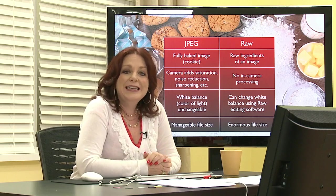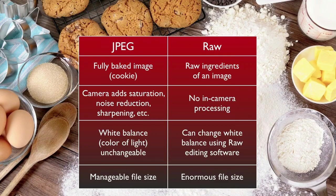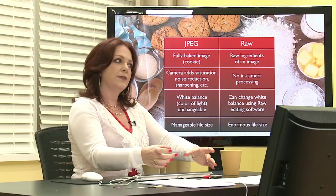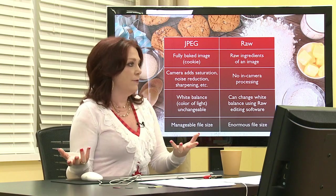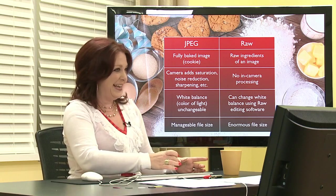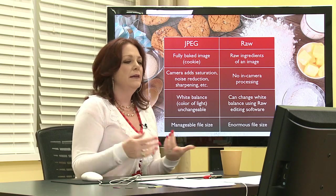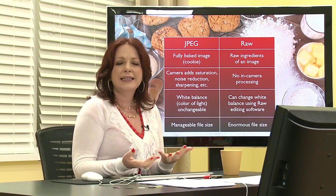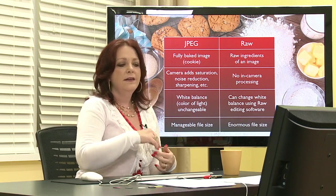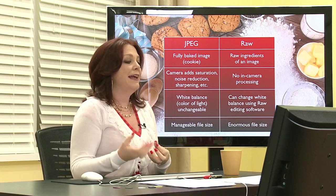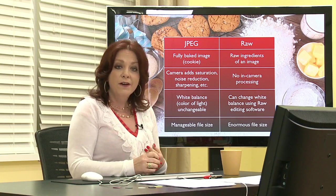Before we jump into the actual software, let's talk about the differences between shooting in raw format versus JPEG. Using the ingredients for baking analogy, a JPEG is like a baked cookie, whereas raw is like the raw ingredients of a cookie. Raw images are unprocessed and uncompressed — like a negative. They contain maximum information about your file: maximum color, maximum lighting information. Because there's so much information and it hasn't been processed in any way, raw files are infinitely flexible, far more flexible than JPEGs.